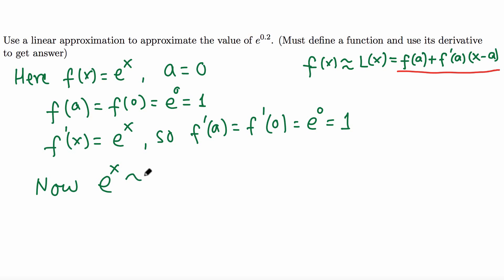Now this function e^x is approximated by this linear function, which is f(a) plus f'(a) times (x - a). That is f(a) is 1, plus this is also 1, times x minus a. That's the nice number 0, so that's 1 plus 1 times x, which is 1 plus x.